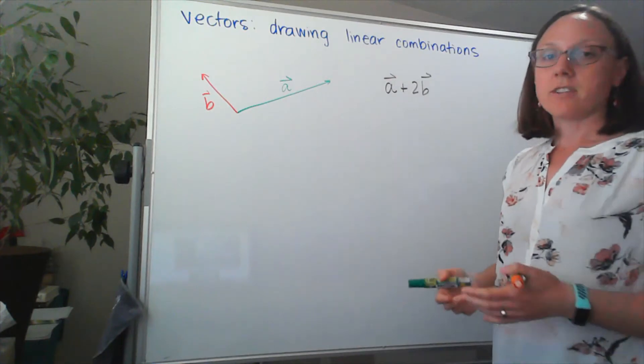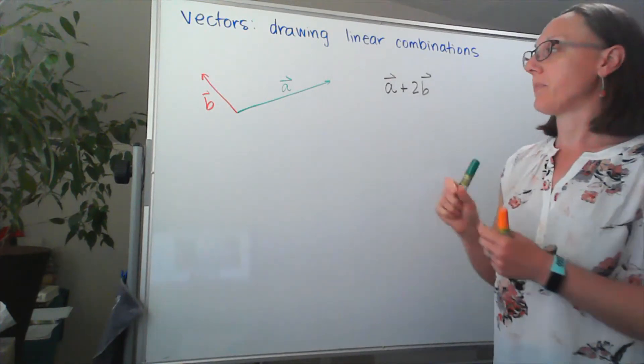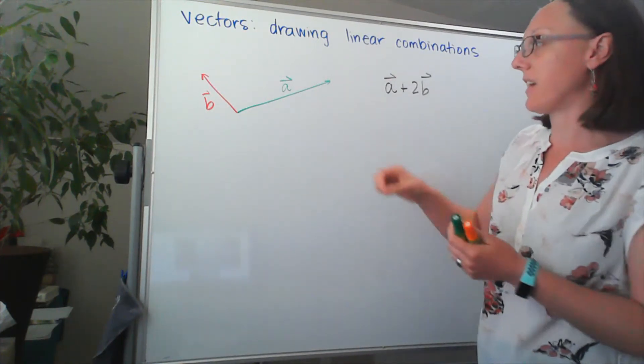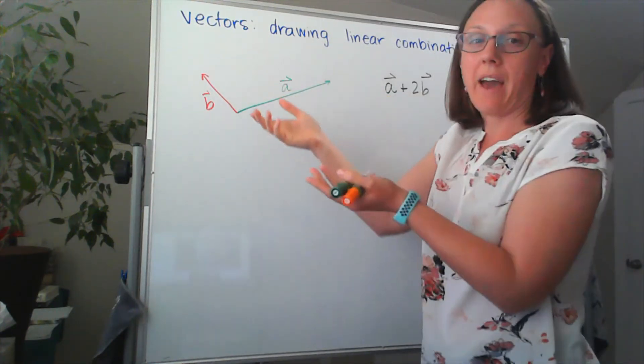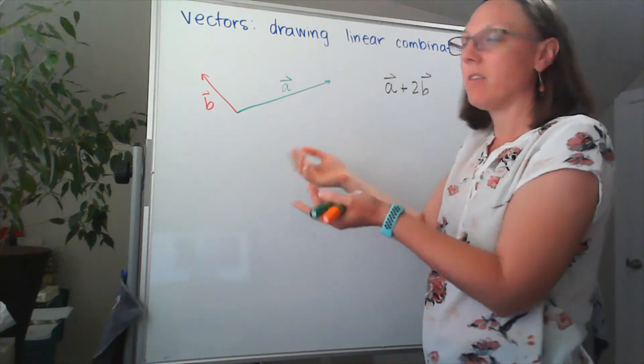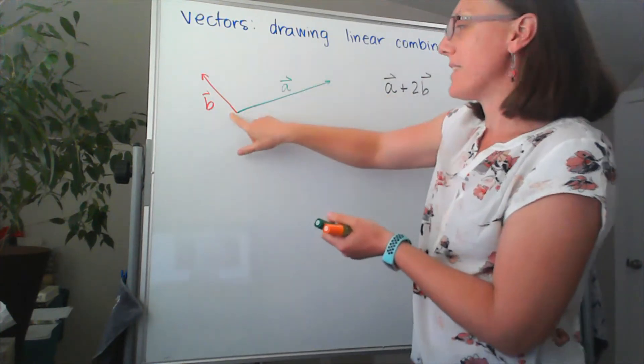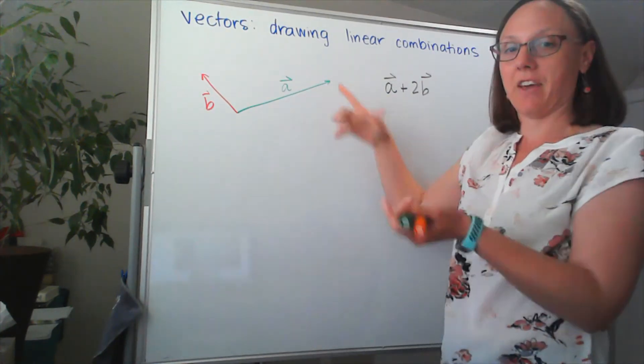Well, when we add vectors, we add them by placing one vector, and we say that we add them head to tail. So we're going to match up the tail of one vector to the head of the other vector.